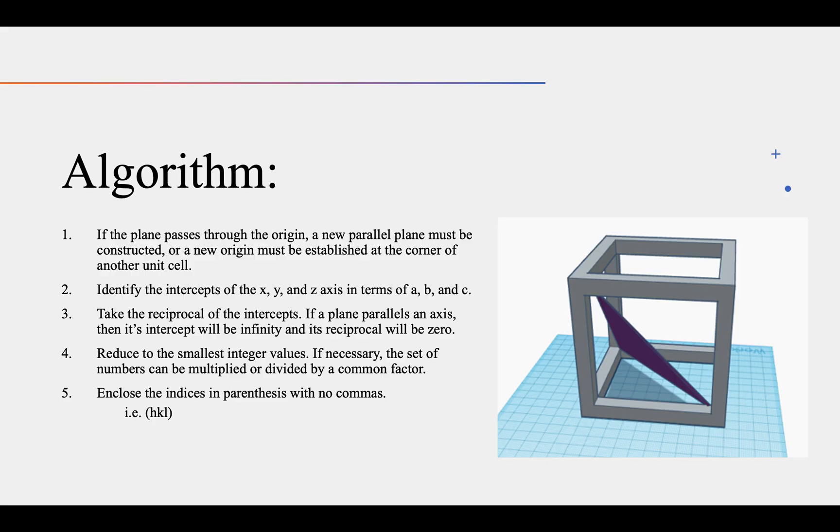There are five steps to determining the Miller Indices. First, if a plane passes through the origin, a new parallel plane must first be constructed, which can be done because all parallel planes have the same Miller Indices, or a new origin must be established at the corner of another unit cell. So to demonstrate, this is my origin, and if this purple plane were intersecting at the origin or passing through, then I would have to make another parallel plane or create a new unit cell with a different origin.